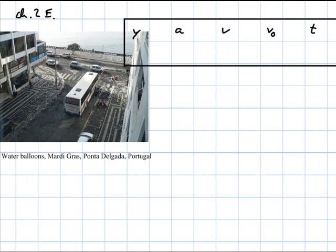From a bedroom window, a girl drops a water-filled balloon to the ground 6.0 meters below. If the balloon is released from rest, how long is it in the air?